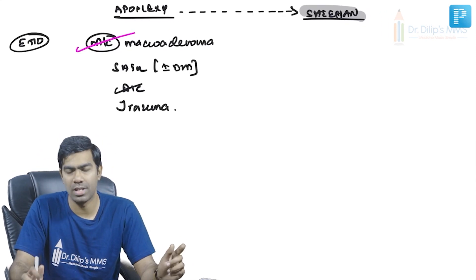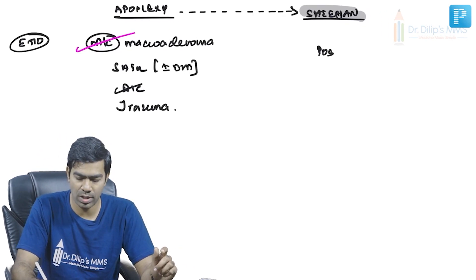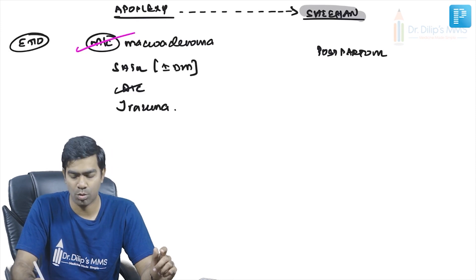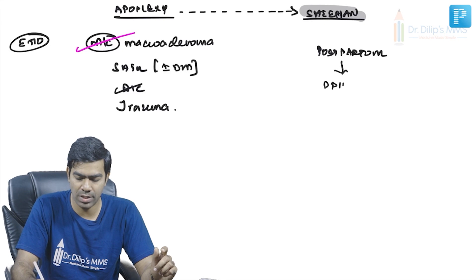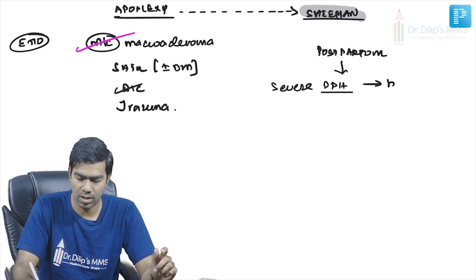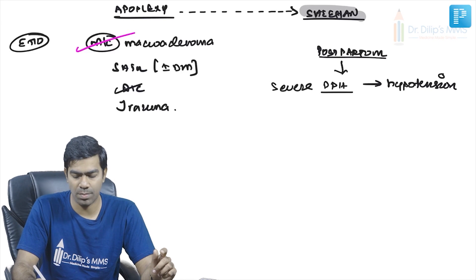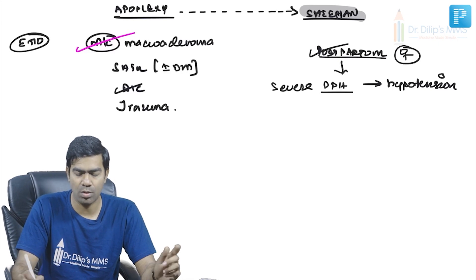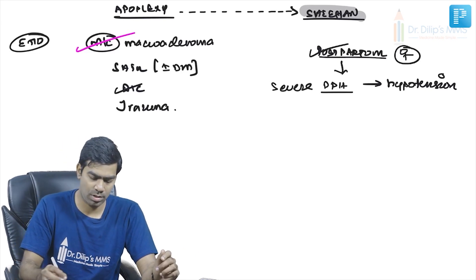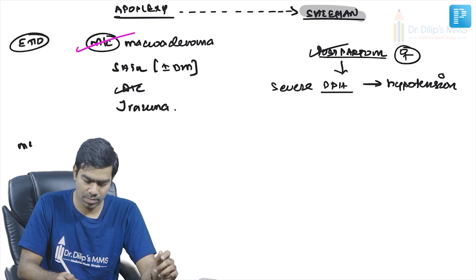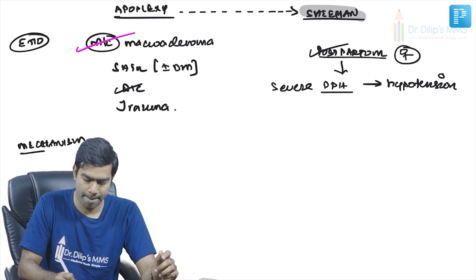Sheehan syndrome happens only in postpartum women, caused by severe postpartum hemorrhage leading to hypotension.